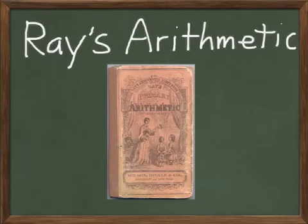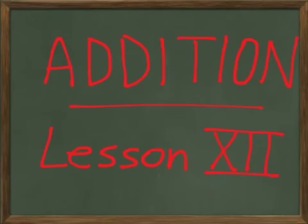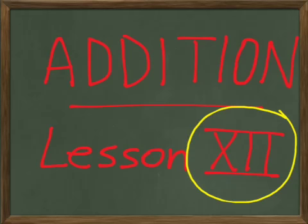In Ray's Arithmetic today, we are moving on to Lesson 12. Just like I pointed out last time in the book, all the lesson numbers are written as letters, which are the Roman numeral system, and that's actually the way we write 12 in Roman numerals: XII.